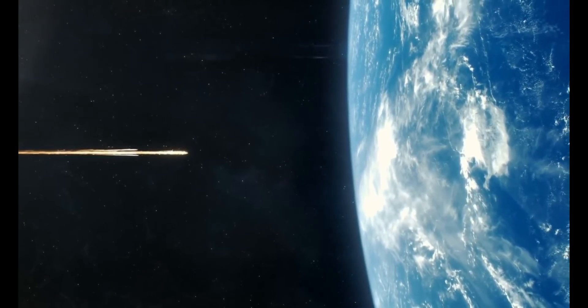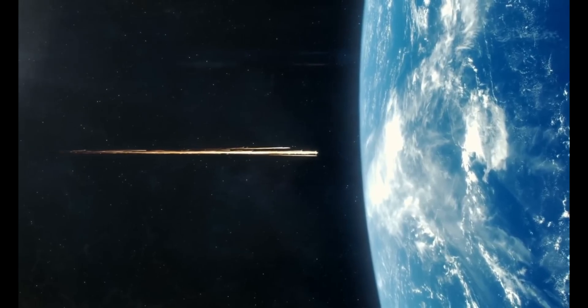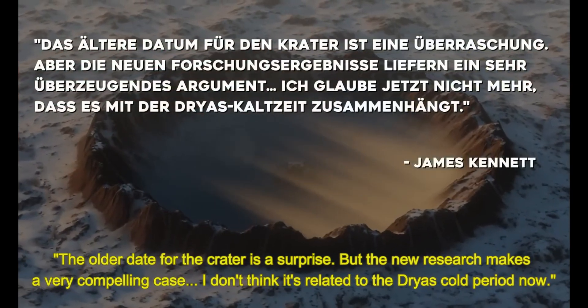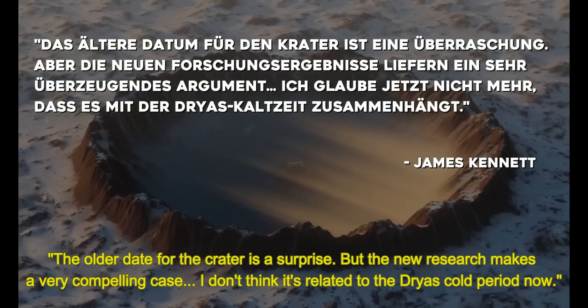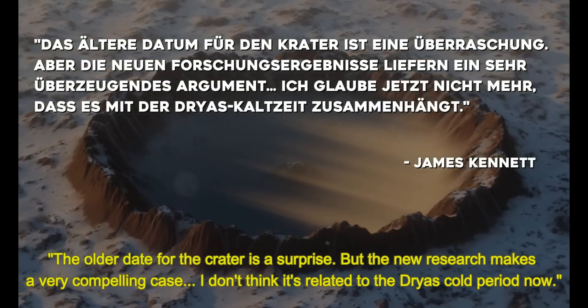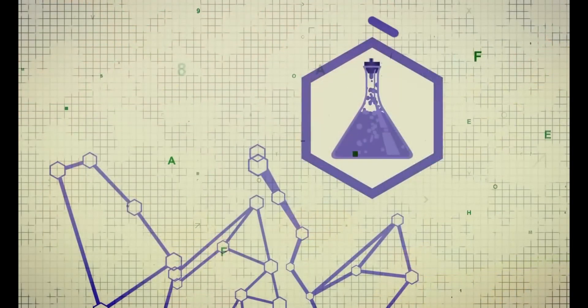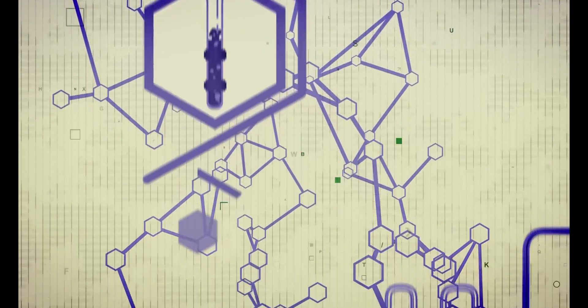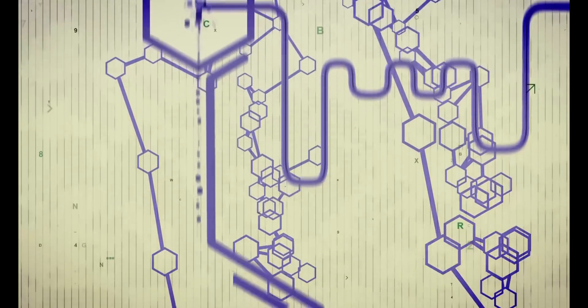Presumably many prehistoric creatures lived there at that time and their day was spoiled by the impact. The meteorite did not hit a thick layer of ice but smashed directly into the ground, equivalent to the force of several million Hiroshima atomic bombs. The newly dated age is a setback for proponents of the Younger Dryas hypothesis. Marine biologist James Kennett of the University of California, one of the leading proponents, admits: 'The older date for the crater is a surprise, but the new research makes a very compelling case. I don't think it's related to the Younger Dryas cold period now.' This is a great example of how science should work — researching hypotheses but always being open to revision by new facts.